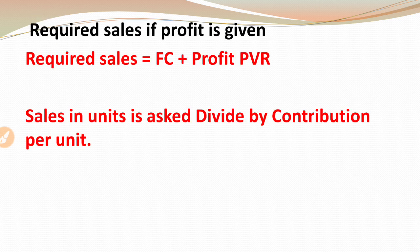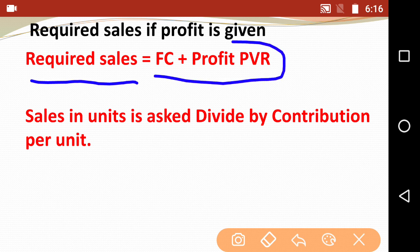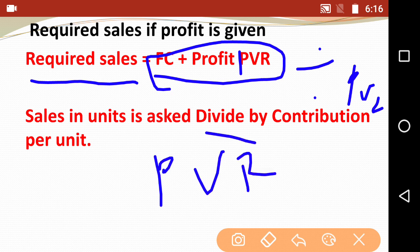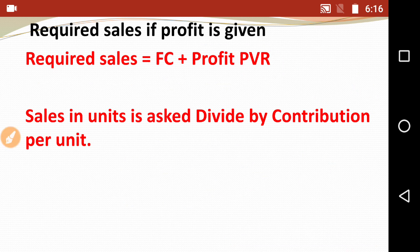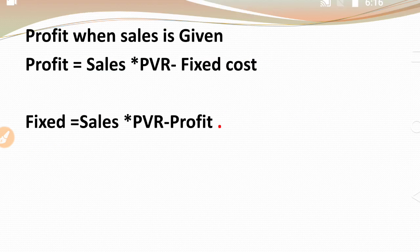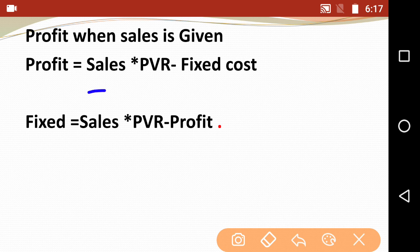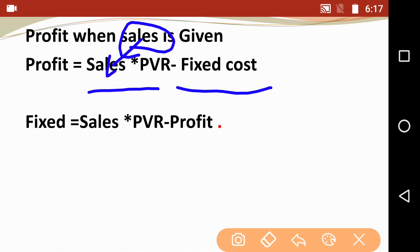Next is Required Sales — finding sales when profit is given. The formula is: Required Sales equals Fixed Cost plus Profit, divided by PVR. If sales in rupees are needed, divide by PVR. If sales in units are needed, divide by Contribution per unit — not PVR. So when units are asked, use Fixed Cost plus Profit divided by Contribution per unit.